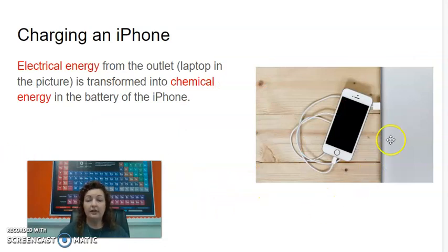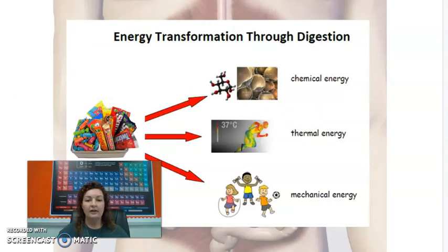Charging an iPhone. Here's a picture of an iPhone. It's being plugged into a laptop to charge. So electrical energy from the laptop, being plugged in, goes through and it goes to the battery and the battery is chemical energy. So it's going to be electrical to chemical. And then eventually when you use it, it's going to go back to electrical and whatever else you're doing with your iPhone, right? If it's sound to listen to music or whatever.